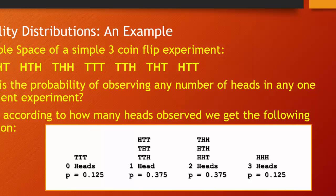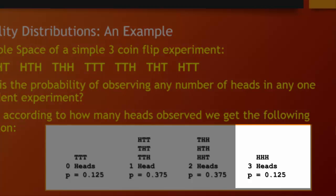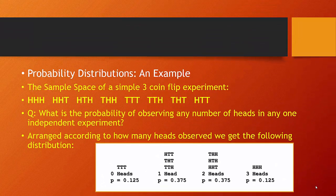We can also see an application of the multiplication rule in this simple distribution. If we know that any one time we flip a coin we have a 0.5 probability of getting a head, we can quickly find the probability of getting three heads: it would be 0.5 times 0.5 times 0.5, or 0.125 — a 1 in 8 chance. So you can see all of the different rules of probability operating simultaneously.